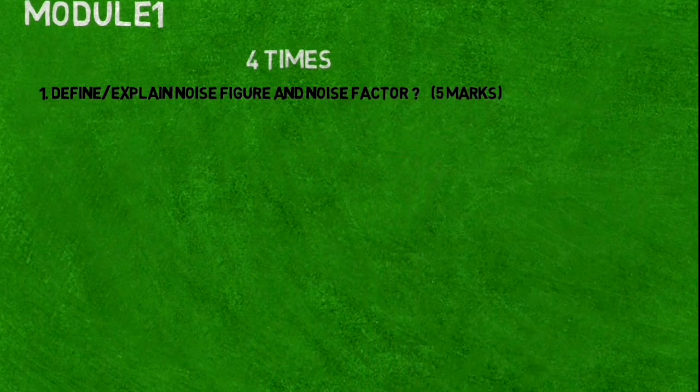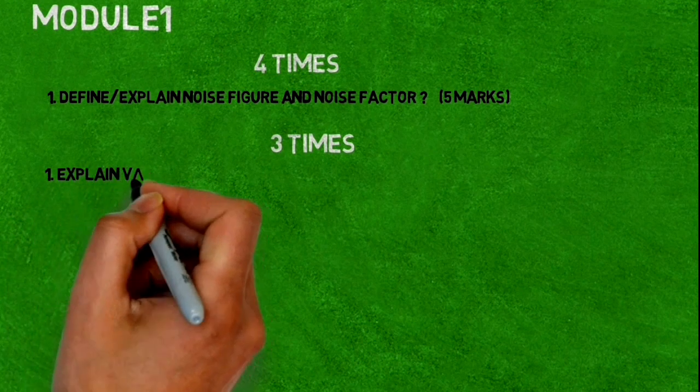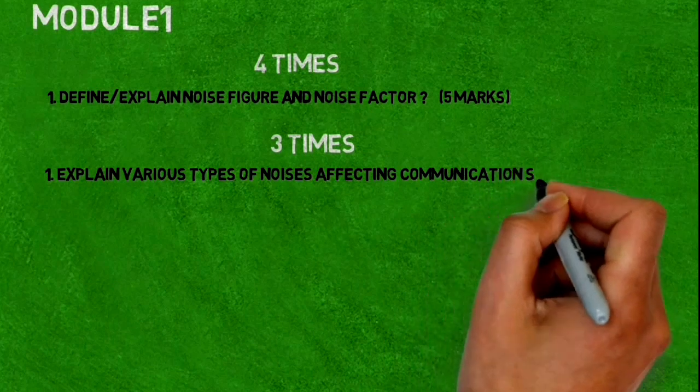Three times repeated question is: explain various types of noise affecting communication systems. It also comes for five marks.